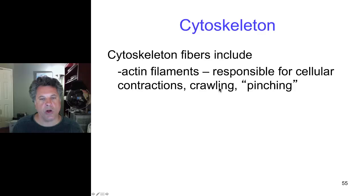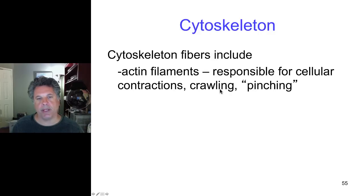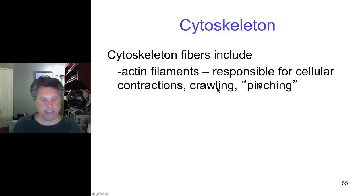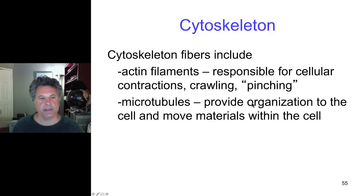Actin filaments can help cells crawl. There is an actin microfilament network underlying the plasma membrane, and that membrane can be caused to ruffle by virtue of changing the actin cytoskeletal elements. Pinching of membrane off can also occur because of the action of the actin microfilaments.